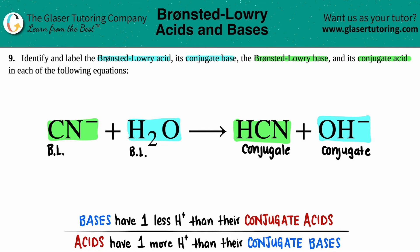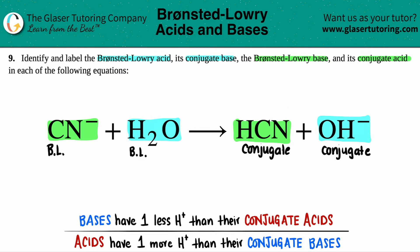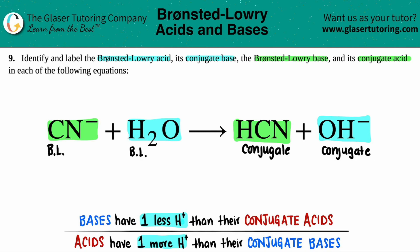Now we're going to analyze one of the pairs — whichever one you think is easiest. Let's go with CN⁻ and HCN. We have to figure out which one is the acid and which is the base. Keep in mind that acids will always have one more hydrogen than their conjugate bases, and bases will have one less H. Acids have one more H; it's basically saying the same thing in reverse order.